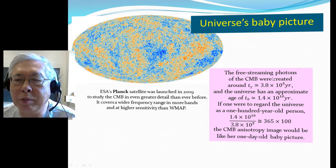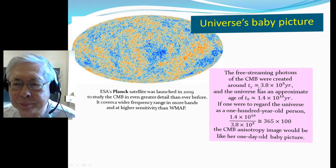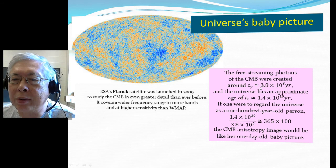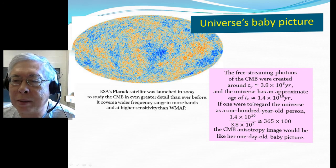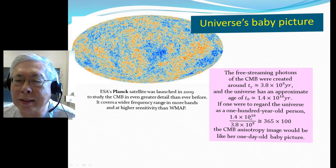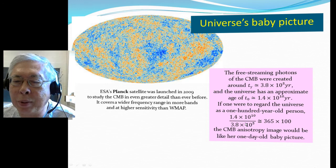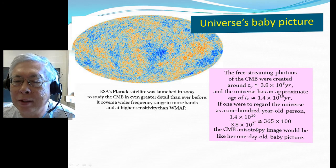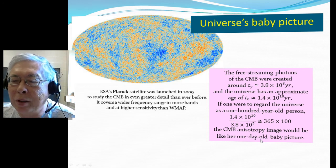What do I mean by that? The free-streaming photons were created around photon decoupling time, 380,000 years after the Big Bang, and the universe has an approximate age of 14 billion years. So if we regard the universe as a 100-year-old person, the age divided by the time when the picture was created comes out to around 365 times 100. So if the universe is about 100 years old, the CMB picture is like a one-day-old baby picture.